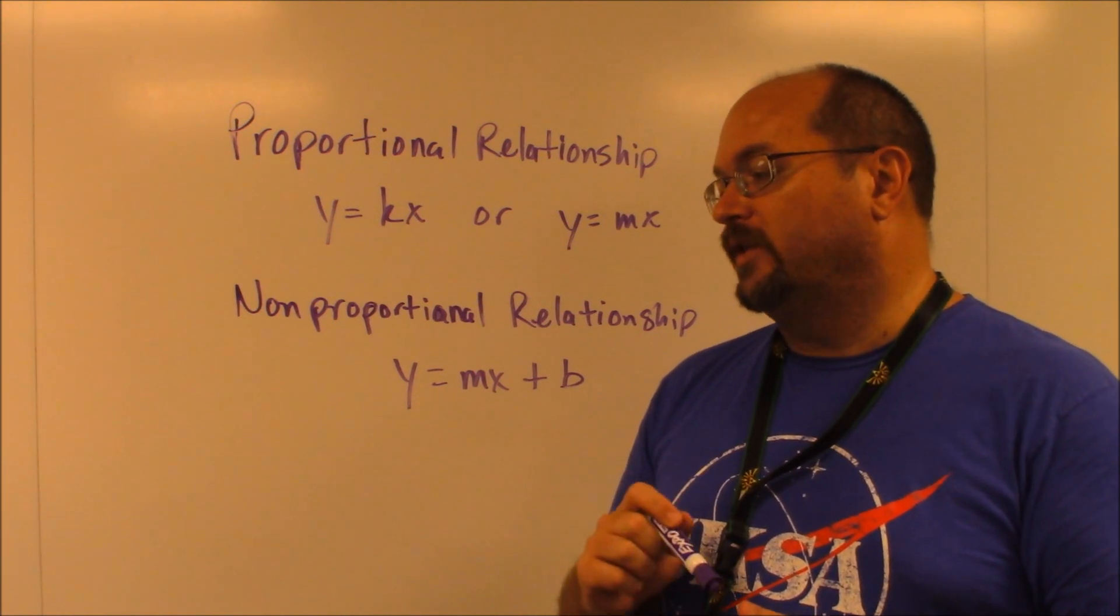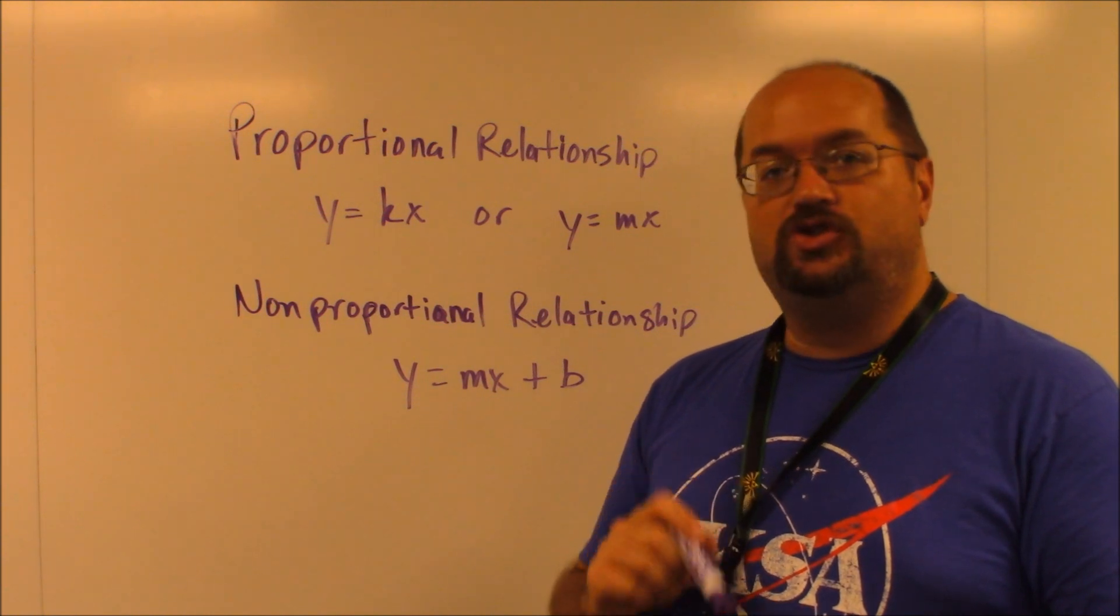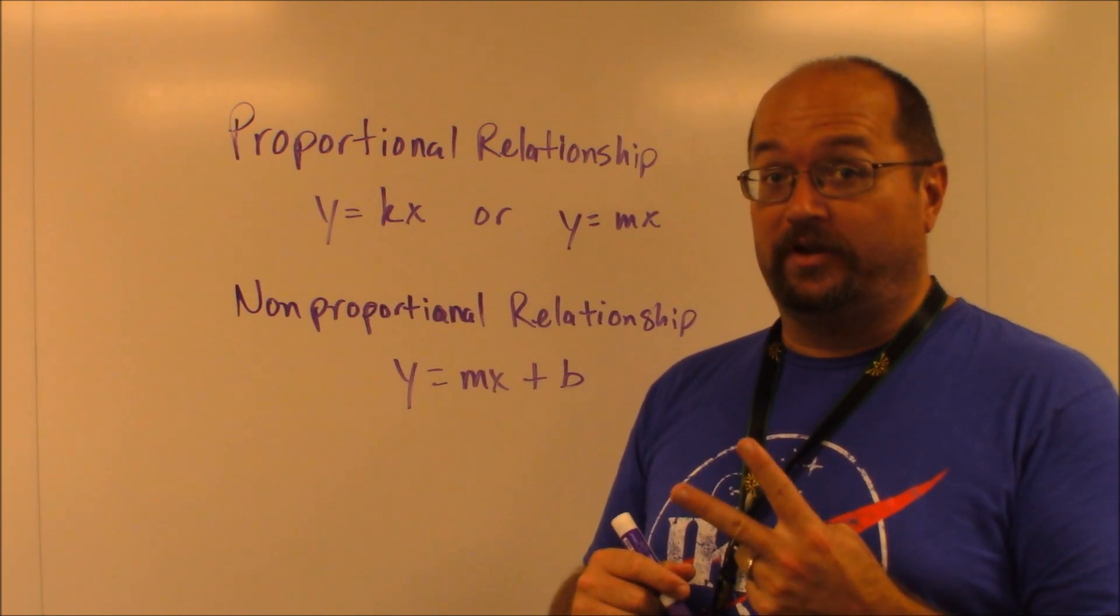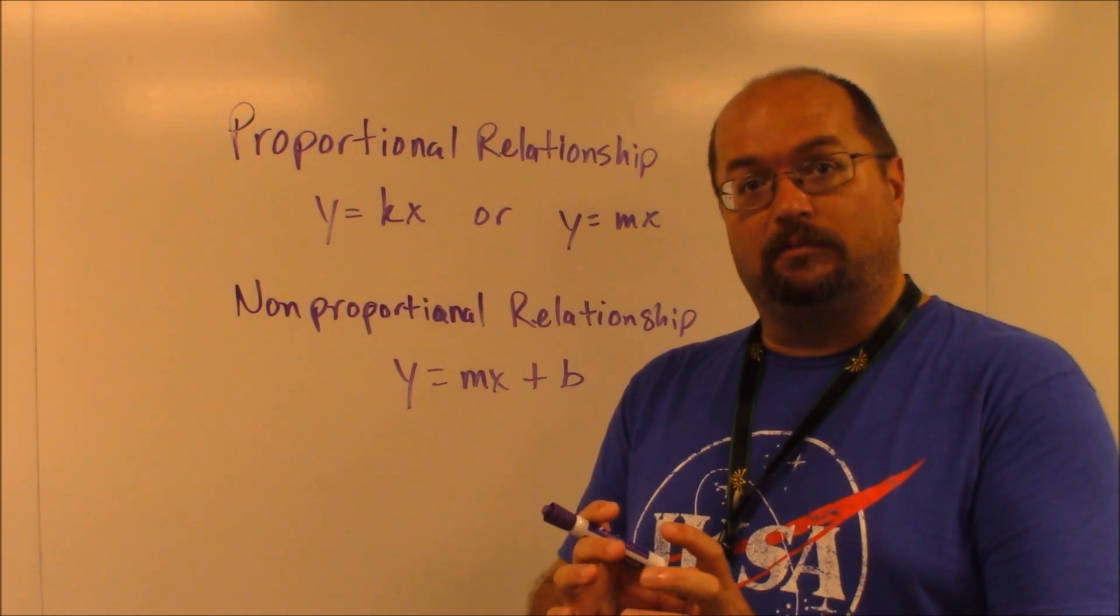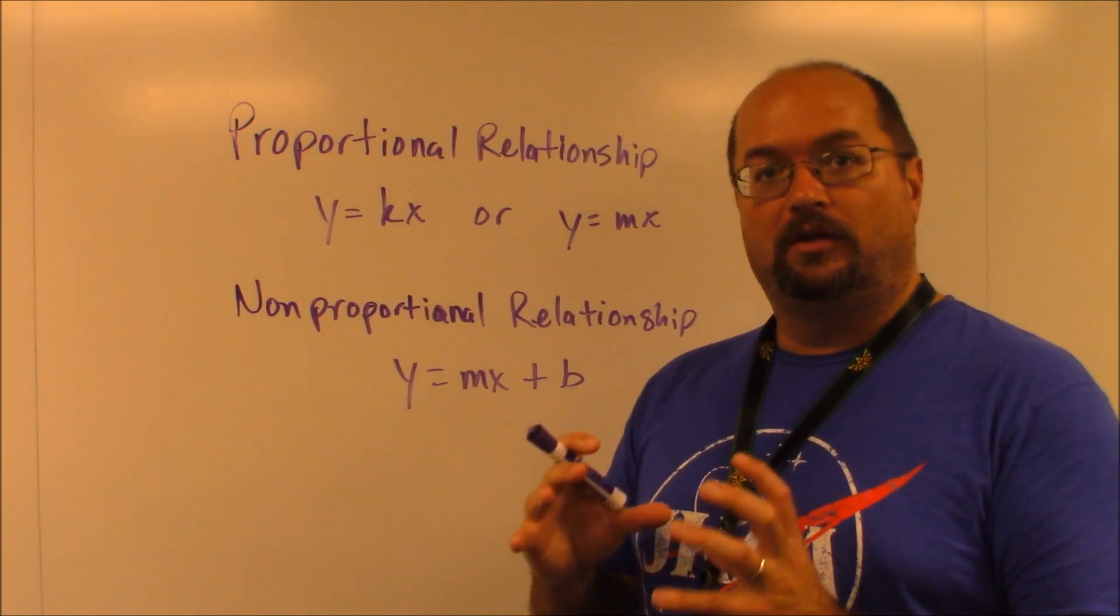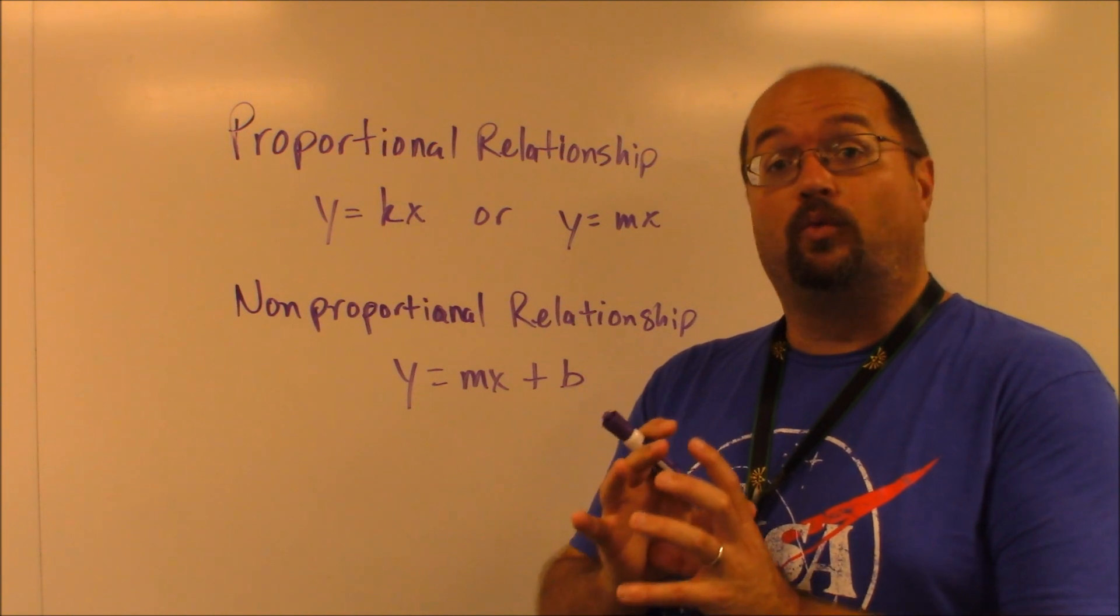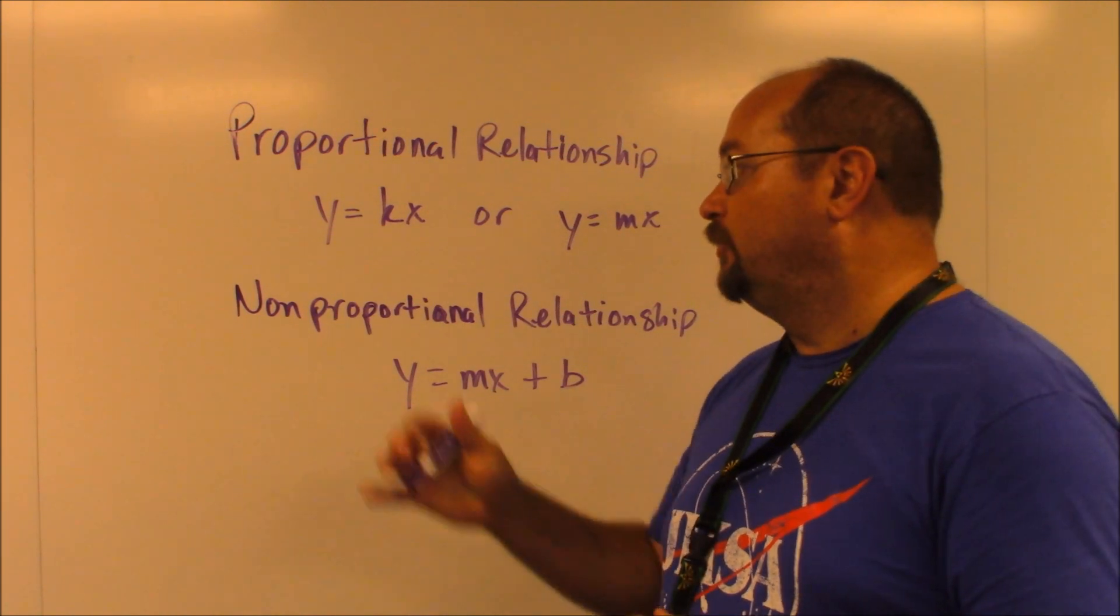Whereas with answer choice H, it was just the hourly rates. Now there were two of them, but they were both per hour, and you could have actually combined them into one slope or one rate of change, and you would have ended up with Y equals 110X.